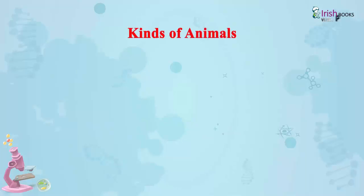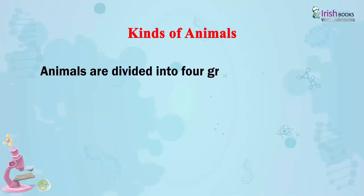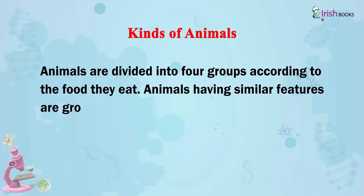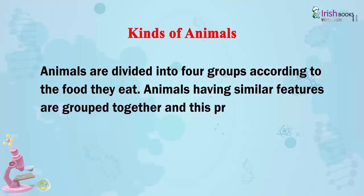Kinds of Animals. Animals are divided into four groups according to the food they eat. Animals having similar features are grouped together, and this process is called classification.